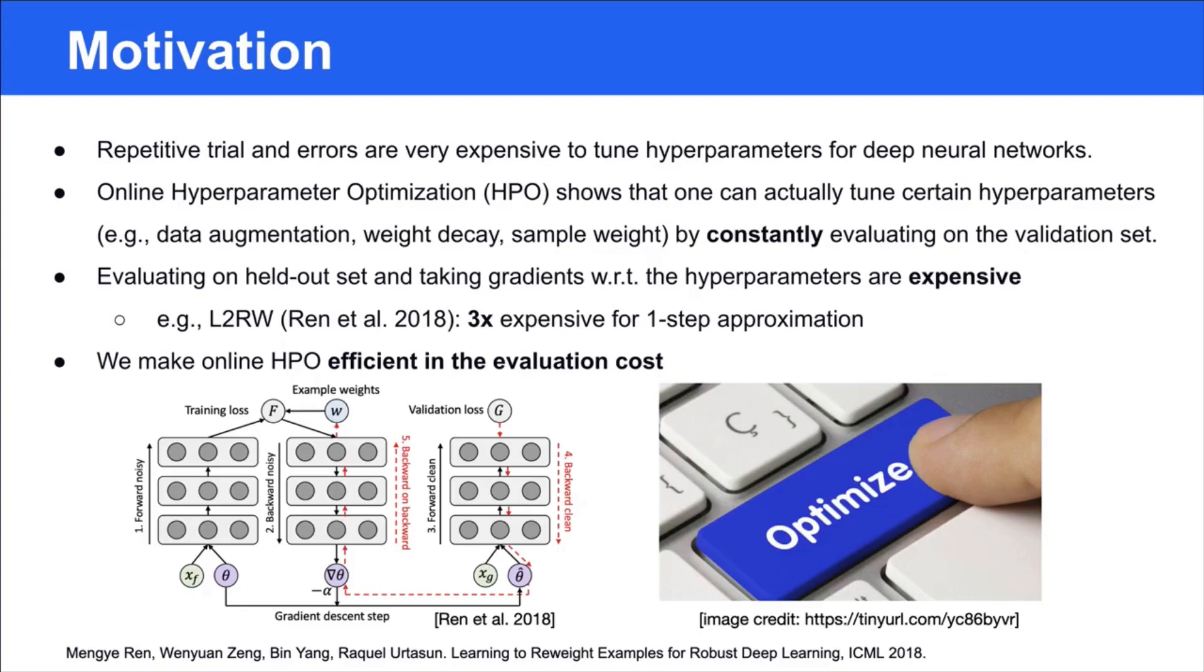For instance, in the learning-to-reweight framework, doing a one-step approximation makes the algorithm three times expensive in computation. As a consequence, we want to make online HPO efficient in the evaluation cost.